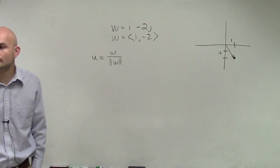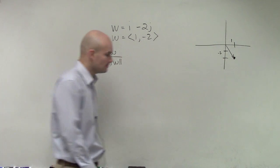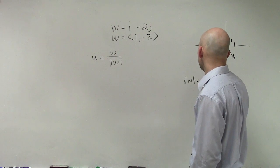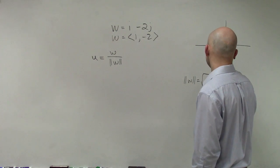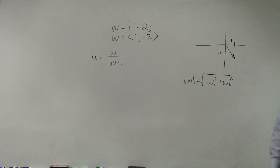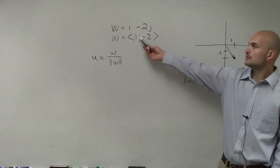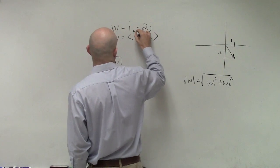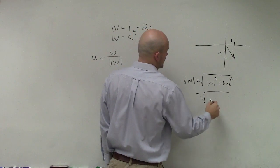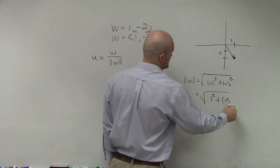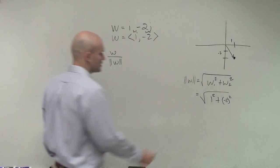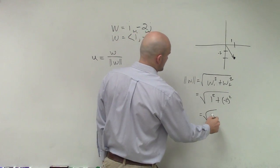So now, what we're going to do is find the magnitude of w. The magnitude of w equals the square root of w1 squared plus w2 squared. So this is going to be w1, and this will be w2. So that equals the square root of 1 squared plus negative 2 squared. Well, negative 2 squared is 4, 1 squared is 1, so you're going to have the square root of 5.